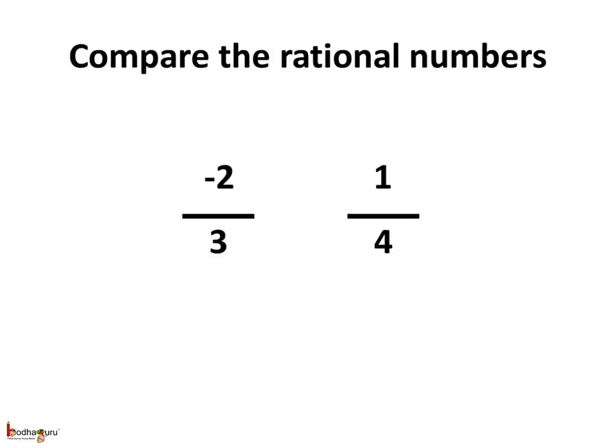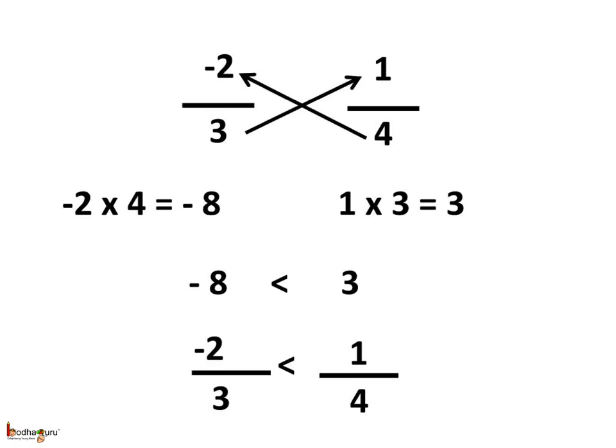Now let us compare the rational numbers minus 2 by 3 and 1 by 4. We do the cross multiplication again: minus 2 multiplied by 4 is equal to minus 8, and 1 multiplied by 3 is equal to 3. Minus 8 is less than 3, so we can say minus 2 by 3 is less than 1 by 4.